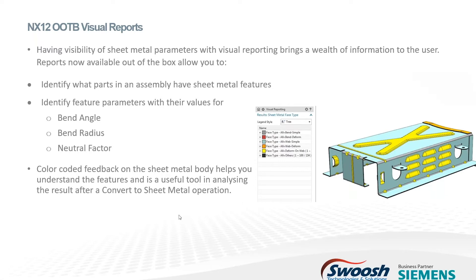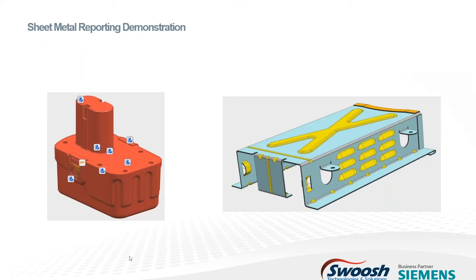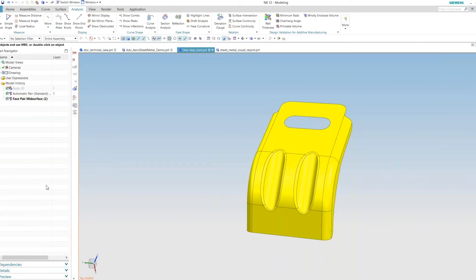There are some built-in checks that will let you highlight faces on the model so you can easily identify plain flanges versus punch features versus webs and things on the sheet metal part. It'll actually help you check that you've got everything done properly — for example, making sure you haven't put the wrong bend radius or wrong bend angle somewhere. Let me show you what that looks like with a live demo.